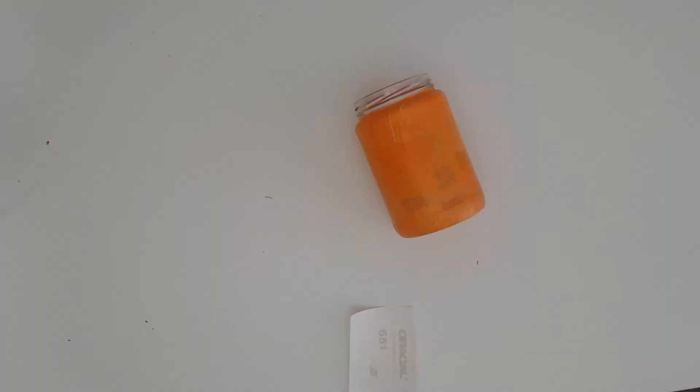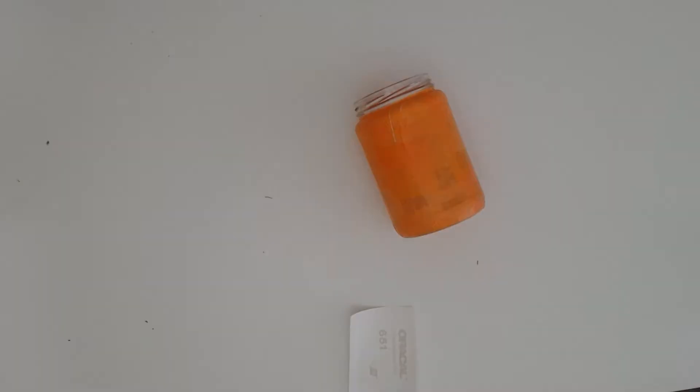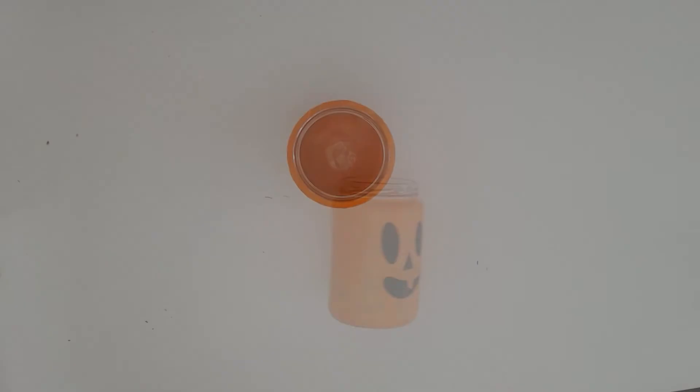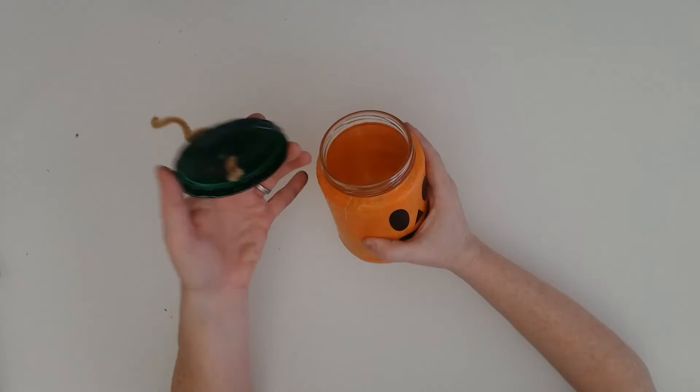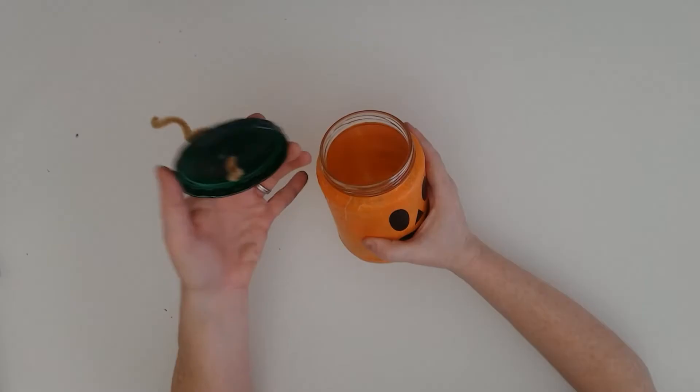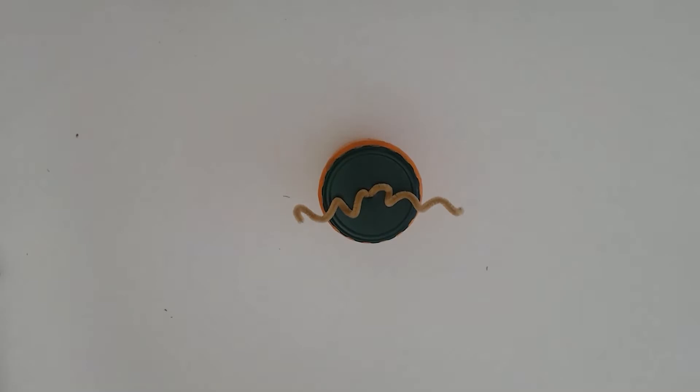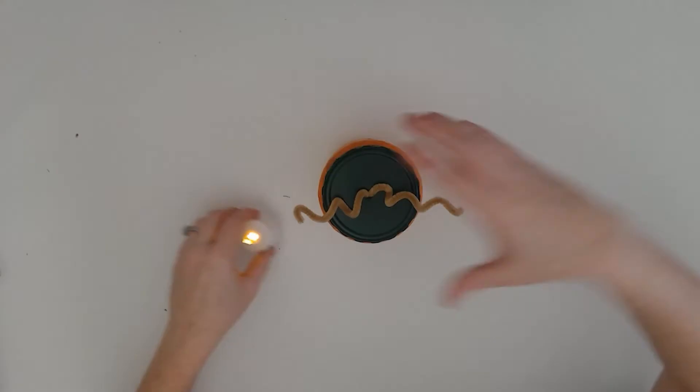Then it's ready for your jack-o'-lantern face. Again, I'm going to use the permanent vinyl, but you could just as easily cut the pieces in some black cardstock and adhere them to the jar with some glue. Then you can put the lid back on and some spiralized chenille sticks to mimic leaves or stems. You could also add a little battery operated tea light candle. Look how fun that is. You can't be scared of this cute little jack-o'-lantern, it's just too adorable.